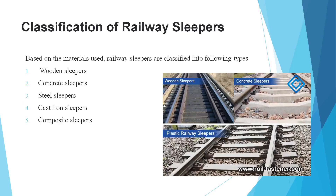Now we will know about the classifications of railway sleepers. There are many types of railway sleepers. The first is the wooden sleeper and the concrete sleeper. The third is the steel sleeper and the cast iron sleeper, and the last one is the composite sleeper.